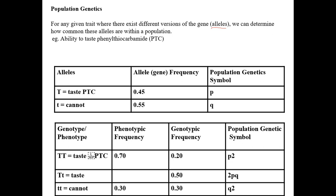The example I'm going to use is a human example: the ability to taste the chemical phenylthiocarbamide, or PTC. Apparently you either can taste it or you can't, and it's controlled by one single gene with two possible alleles. The capital T represents the dominant allele — the ability to taste PTC — and the lowercase t is the recessive version, the inability to taste it.